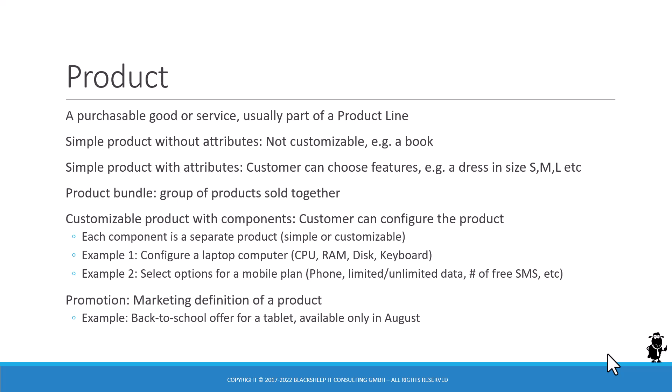Moving beyond those two simple products, we come to an intermediate stage — product bundles. Let's say that for some marketing purpose, the book and the dress are sold together. It's a bundle of products. Customers might gain time by buying the bundle, or they might be offered a special price because they've bought those products sold together.